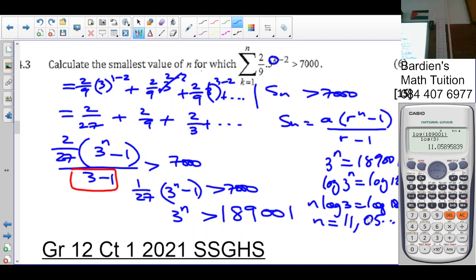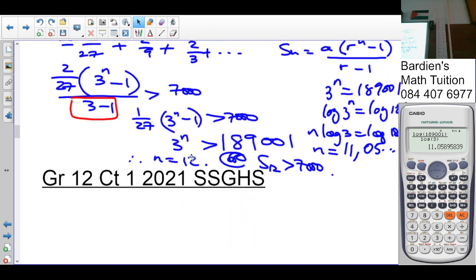So at 11, if it's at 11, then it will be less than 189,001. We can plug it in the calculator and check it for yourself. Otherwise, the smallest value for N, it has to be 12. Therefore, N is equal to 12. Or you can say that S12 has to be greater than 7000. But again, more logs when we get there. So in this exam, I don't think you guys will have some logs.